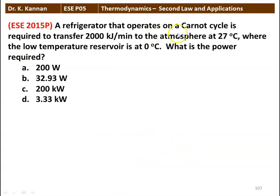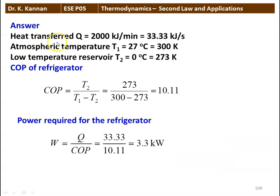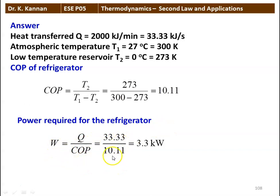Next question: a refrigerator operating on a Carnot cycle is required to transfer 2000 kJ per minute to the atmosphere at 27°C, where the low temperature reservoir is at 0°C. What is the power required? Options: 200 watts, 32.93 watts, 200 kilowatts, or 3.33 kilowatts. Answer: Q = 2000 kJ/min = 33.33 kJ/s. T1 = 300 K, T2 = 273 K. COP = 273/(300−273) = 10.11. Power W = Q/COP = 33.33/10.11 = 3.3 kilowatts.